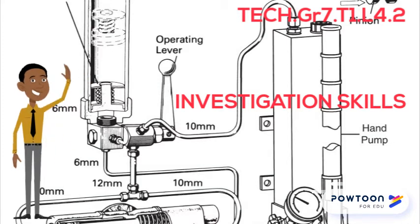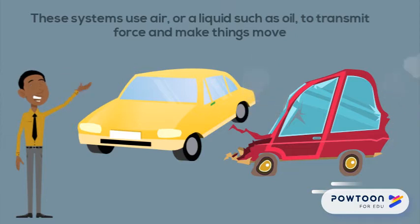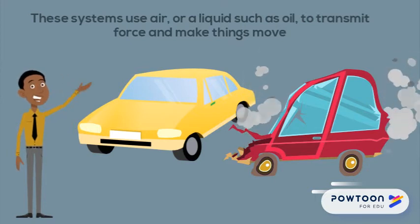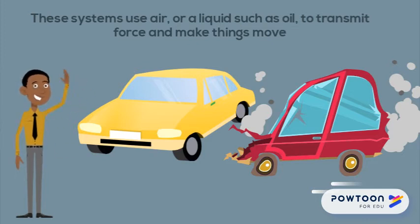Have you ever used a bicycle pump to inflate a flat tire? Have you ever wondered how the brakes on a taxi work? These systems use air or liquids such as oil to transmit force and make things move. Remember what happens when you blow up a balloon and then let it go — as the air inside the balloon rushes out, the balloon is propelled through the air, and a similar principle is used in pneumatic and hydraulic systems.